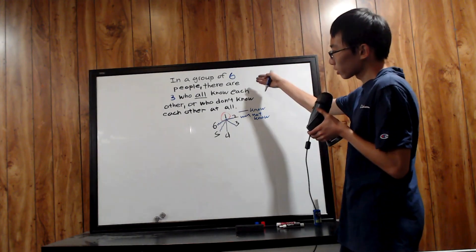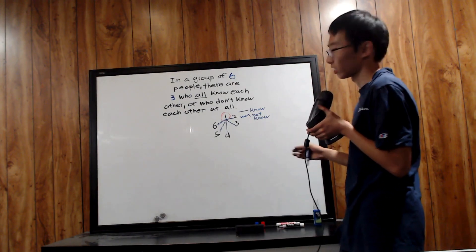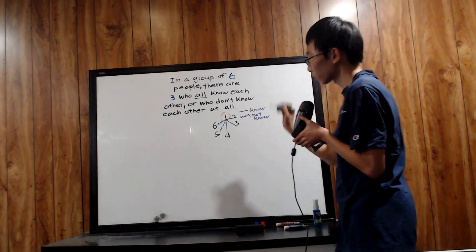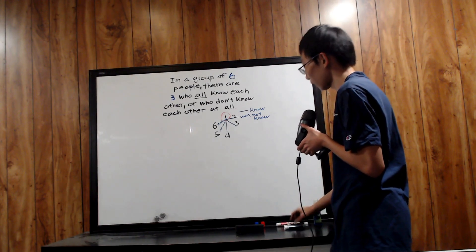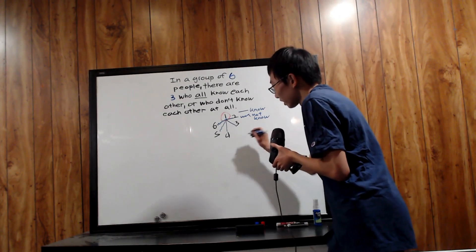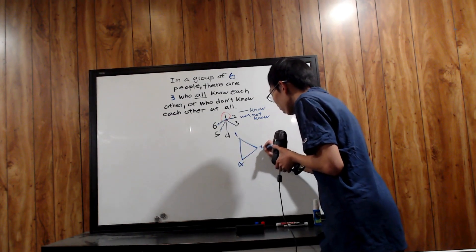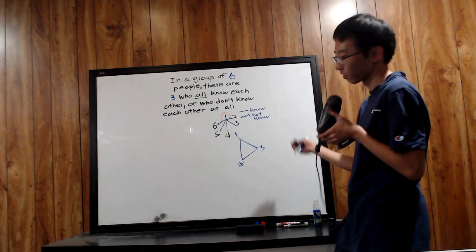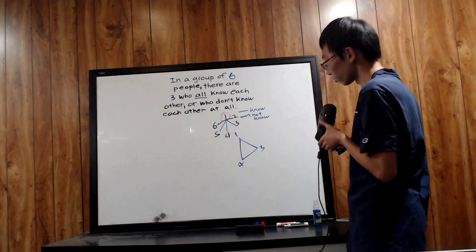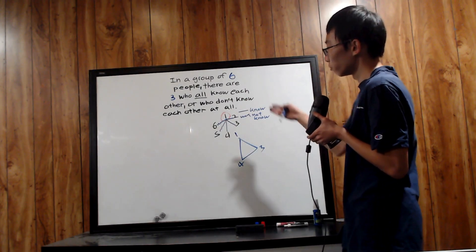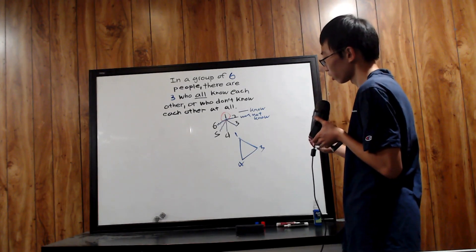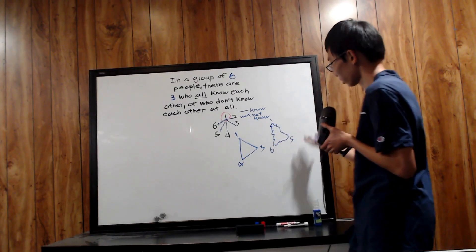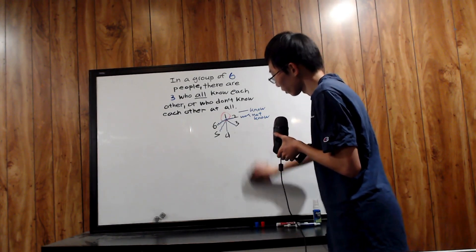Now let's translate this problem in terms of graph theory. Notice that this problem is equivalent to asking us to prove that within this graph, there must be a triangle made up of the same type of line. For instance, a triangle with one, four, and three made of solid lines would mean all of them know each other — assuming knowing is mutual. So we can either have a solid-line triangle or a crooked-line triangle, like one, six, and five. Let's set out to prove that such a triangle must exist.